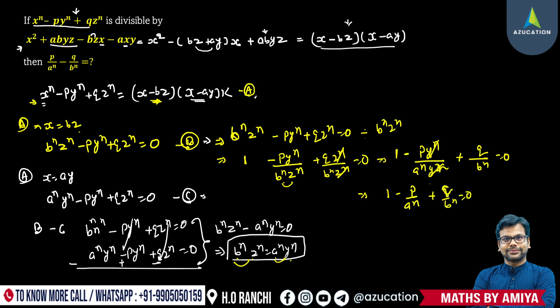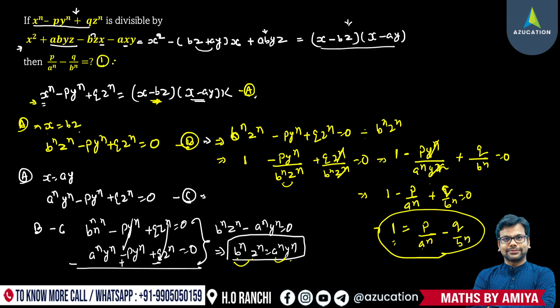From here we can say 1 equals paⁿ minus qbⁿ, taking everything to the right-hand side. So the value of paⁿ minus qbⁿ is 1, and this is our answer. This is one of the interesting questions of algebra, but quite tough too — a top exam question.